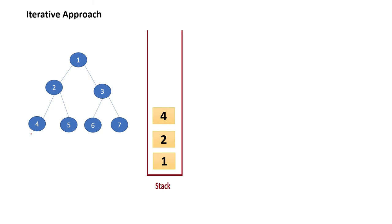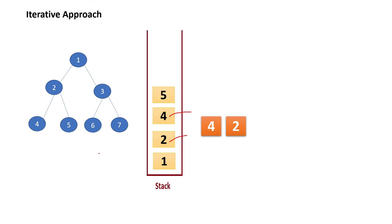For 4 we check if there is any left — no, so we pop 4 and print it. When popping, we check if there is anything on the right side — for 4 there is nothing, so this part is done. Then we pop 2 and print it. After popping 2 we check if there is anything on the right — yes, for 2 the right is 5, so we push 5 inside the stack. Next we check for 5 if there is anything on the left — there is not, so we pop 5 and print. After popping we check if there is anything on the right side of 5.